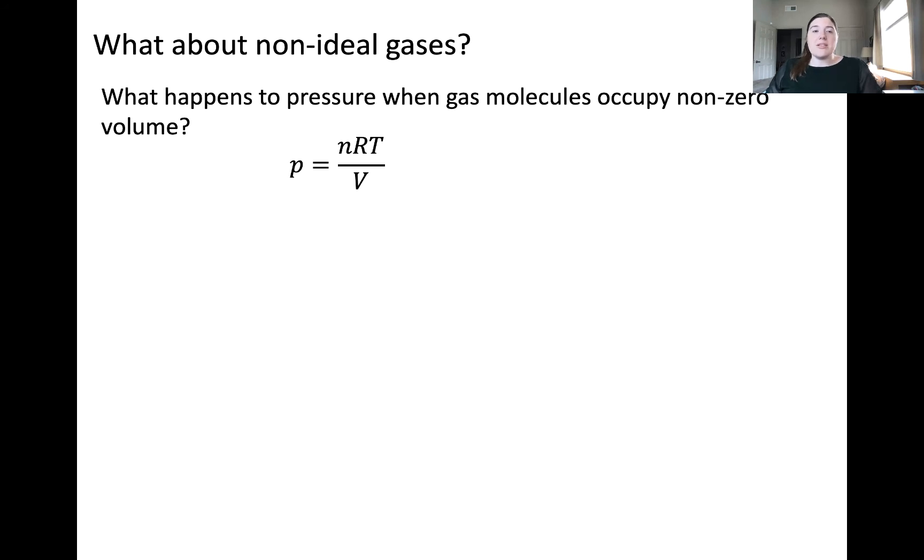The impact on the pressure if gas molecules occupy volume is that the pressure of the gas sample would increase when compared to the ideal gas model. It follows that the mathematical expression for pressure would have a smaller value in the denominator when gas molecules occupy volume.